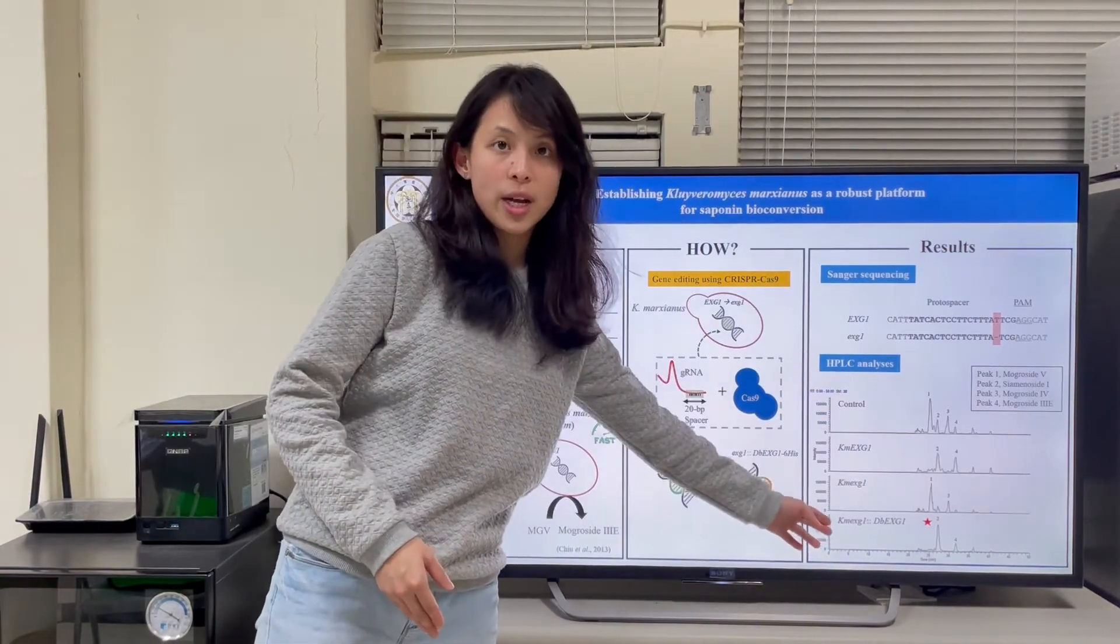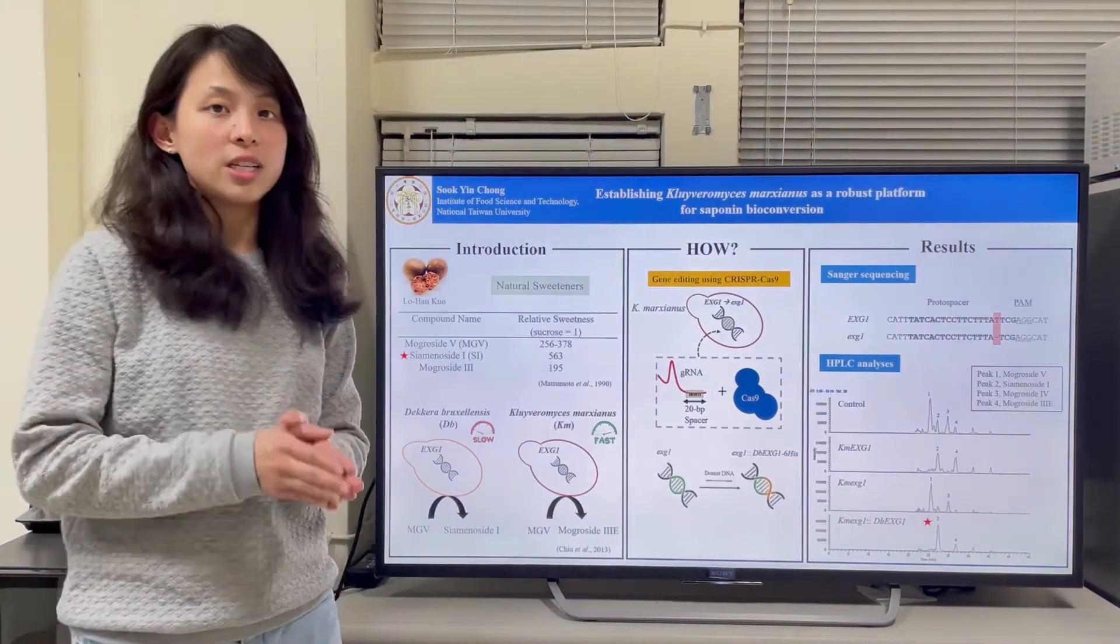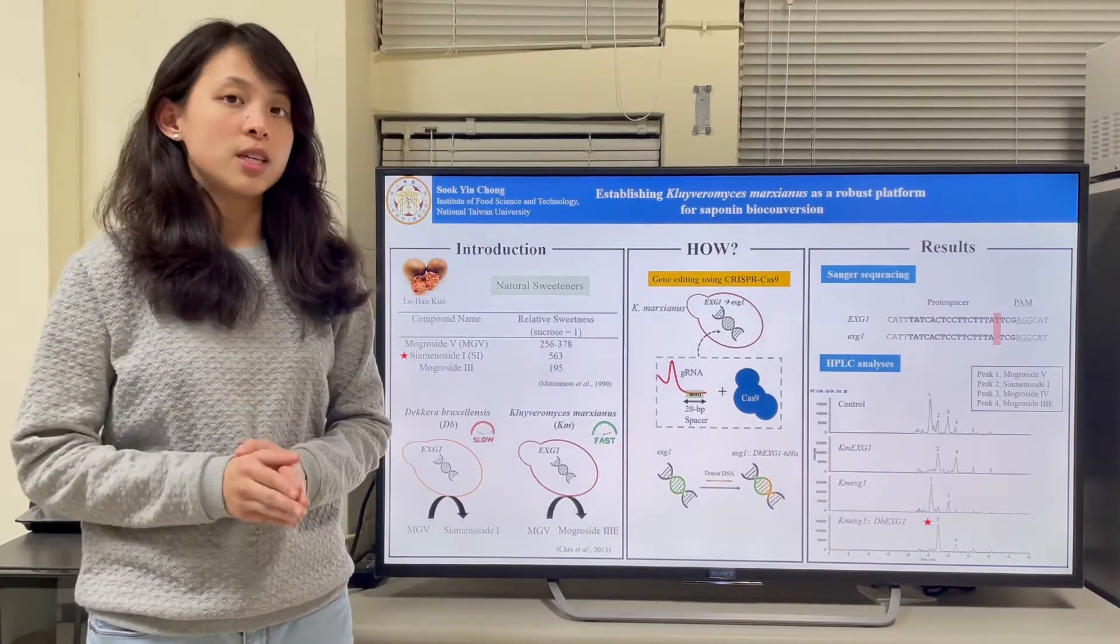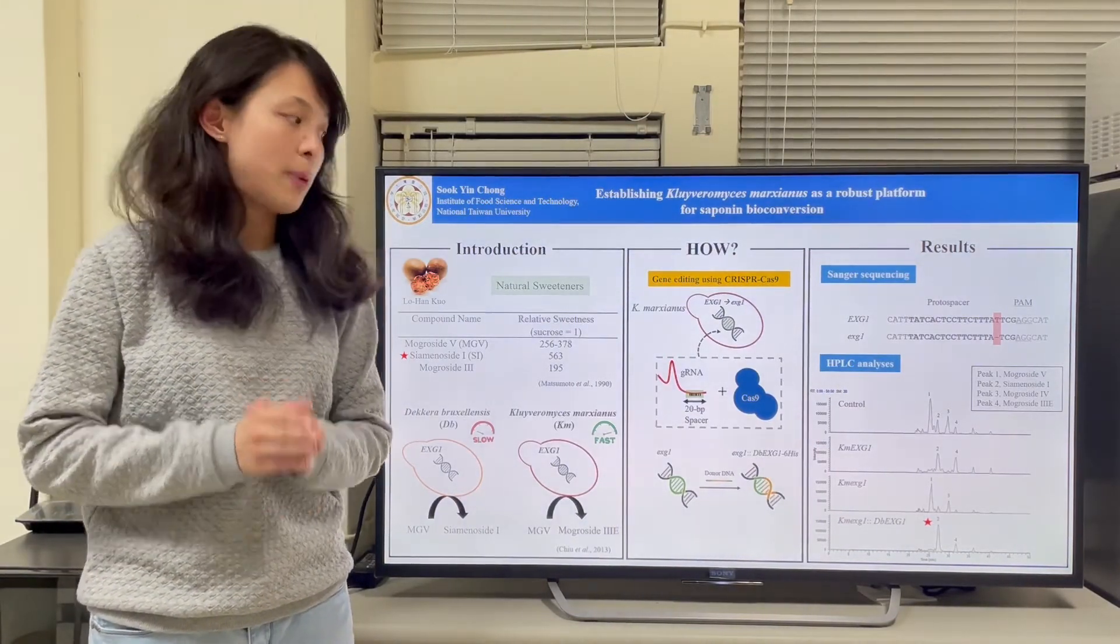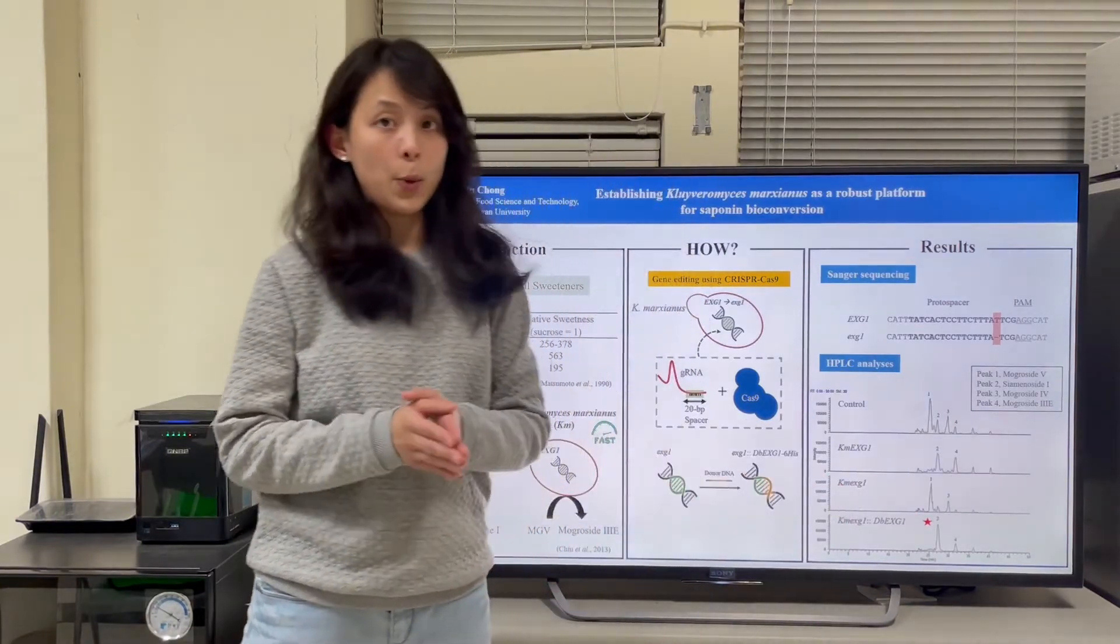After DB-EXG1 integrated into this genetically modified KM, we observed a significant peak. Peak 2 became taller. That is Seminolcide 1.